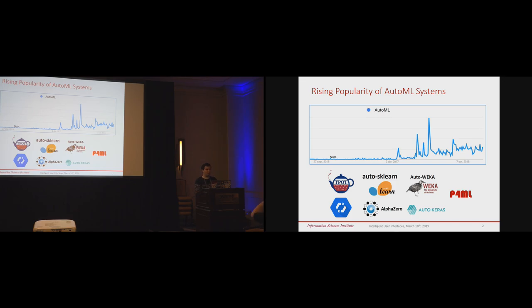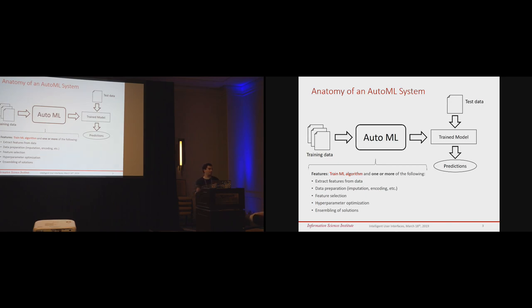So how do AutoML systems work? We have seen a small introduction this morning, but in a nutshell, this is the architecture of how they plan to work. So the idea is that you give to this system your training data, and what it spits out is a trained model that you can use with your test data to produce predictions. You just forget about all the different things that you have to do within the machine learning training process, which is not only training the algorithm itself. It's also about extracting the features of your data in case that you're dealing with text, video, or audio.